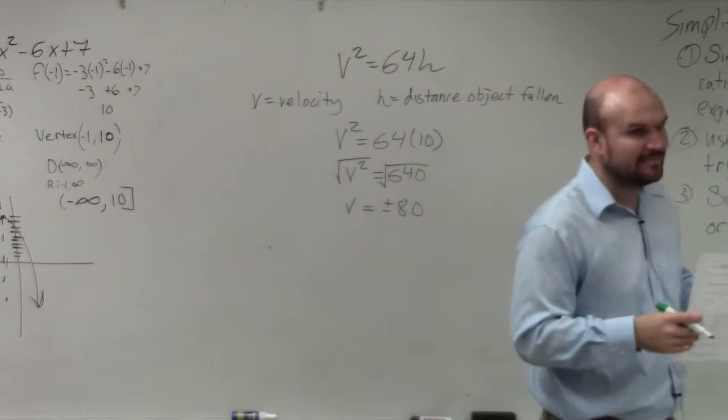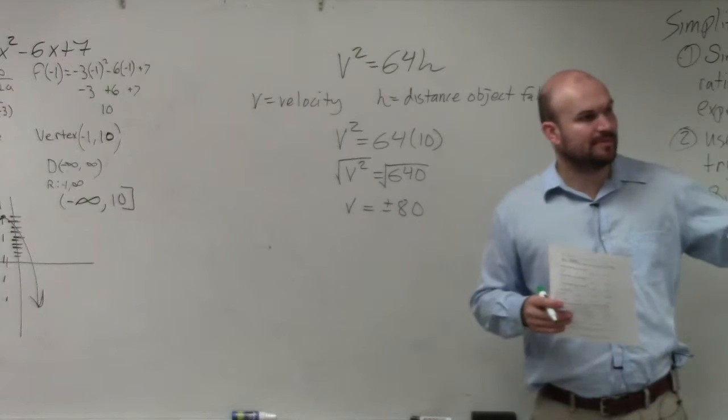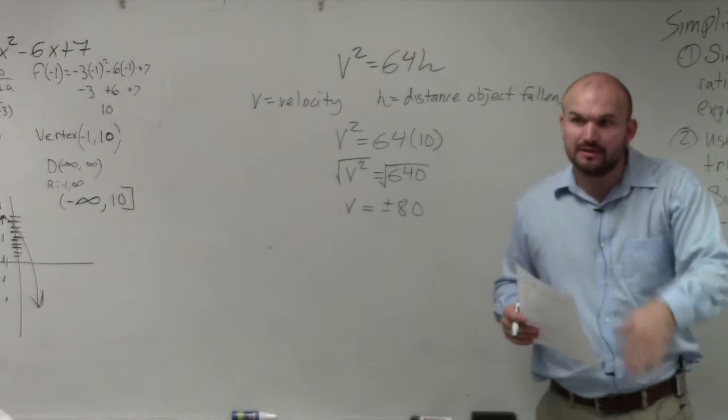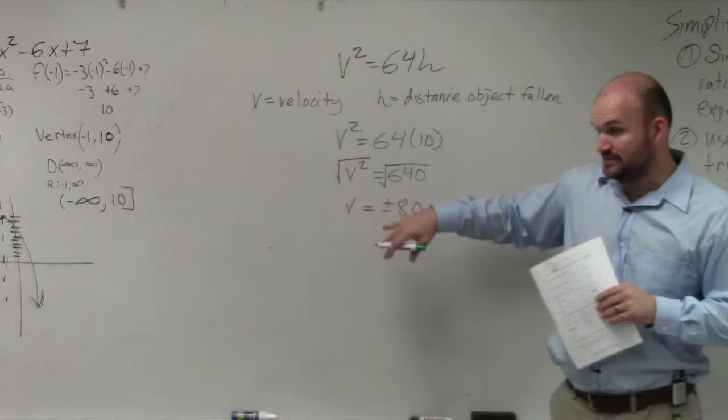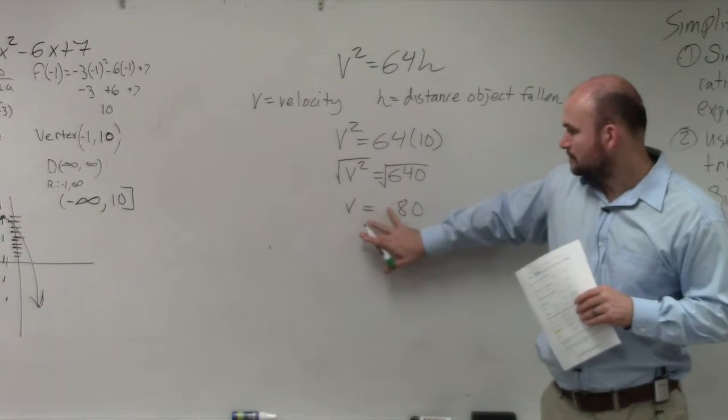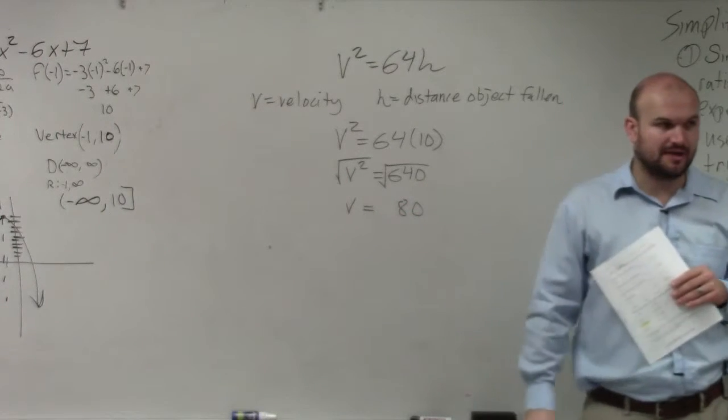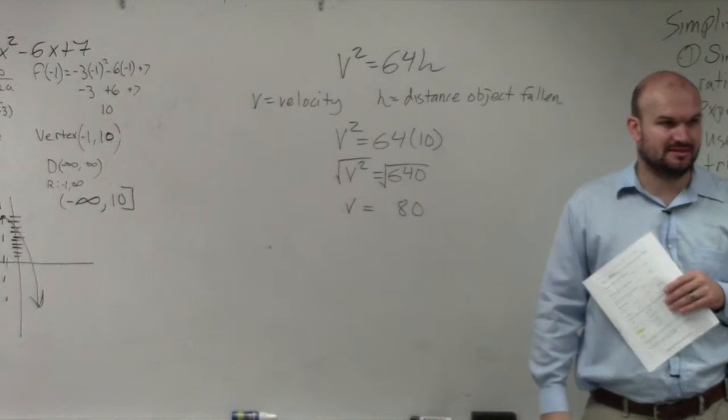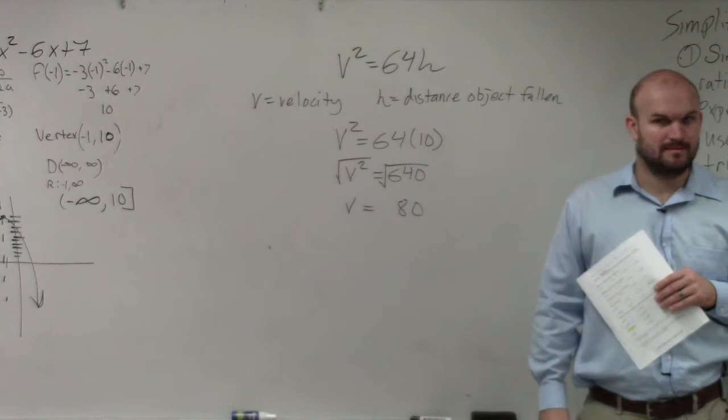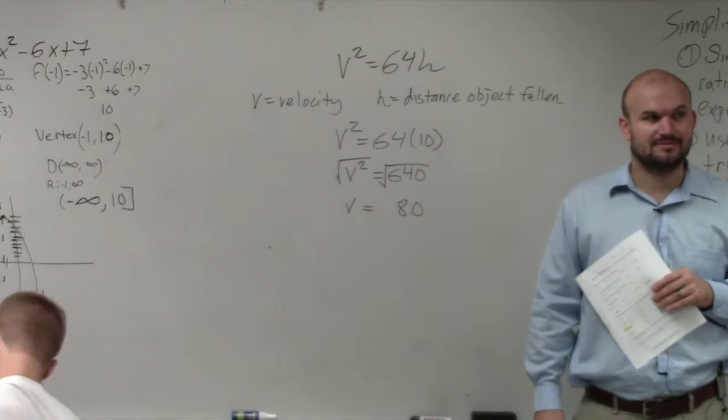Now, velocity is not going to be negative. Velocity is always going to be positive. It can be in a negative direction, but velocity is never going to be negative. So even though it is plus or minus 80, we're just going to use the positive value. Does that make sense?